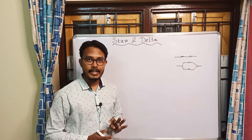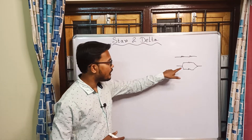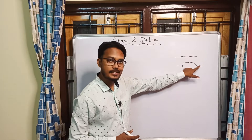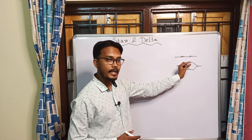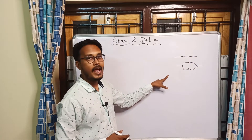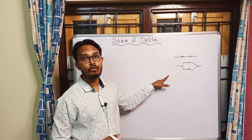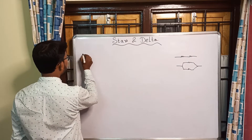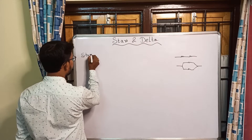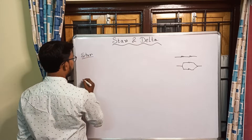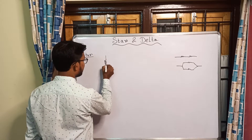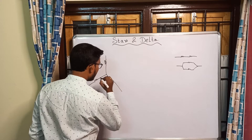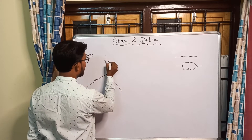Now apart from series and parallel connection, there are two more connections: the star connection and the delta connection. If we take resistances and open them up and stretch them out, this will become the star connection. So first we will discuss the star connection.